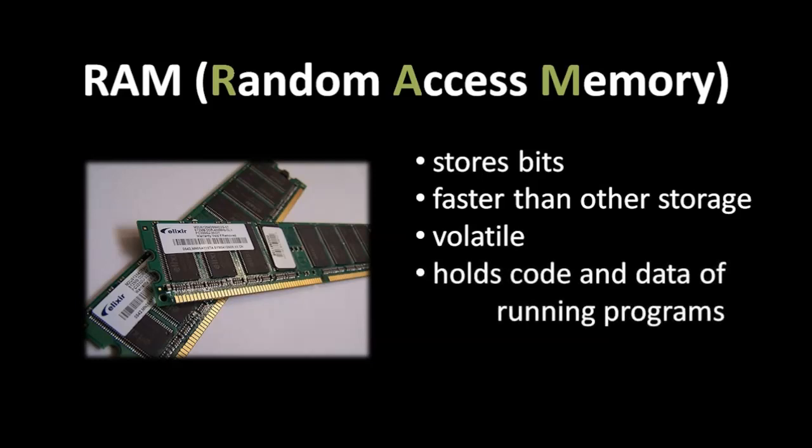Because of these two properties, RAM is used to store the code and also the transient data of any running program. So for example, when you start a program on your system, it is loaded from files off of a hard drive into memory, into RAM. And then, as the program runs, any data created by the program which it needs only for the duration of the program is kept in RAM. Any data which needs to be more permanent has to be written to some non-volatile storage, like your hard drive.